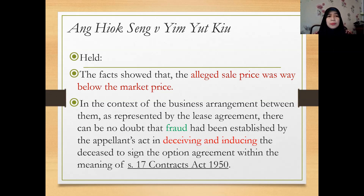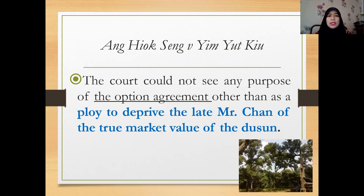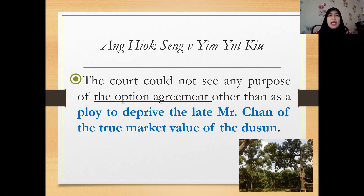The court made a very strong statement: it could not see any purpose of the option agreement other than as a ploy to deprive the late Mr. Chan of the true market value of the land. The value of the land was very high, but the appellant quoted a very low price — the real purpose of the option agreement was to deceive Mr. Chan, not to test the market value as the appellant had claimed.